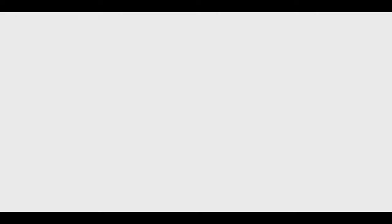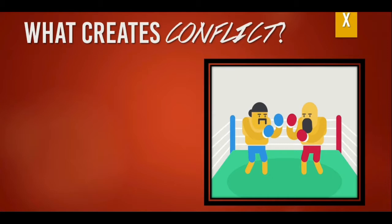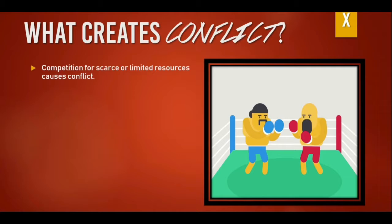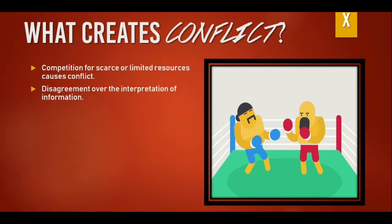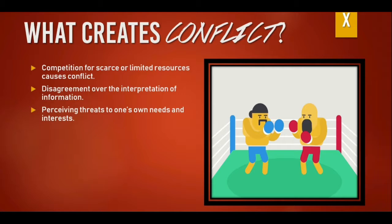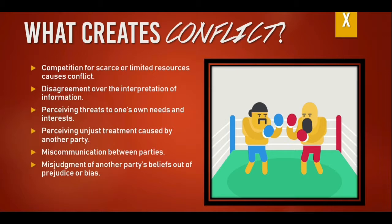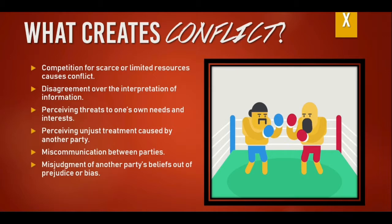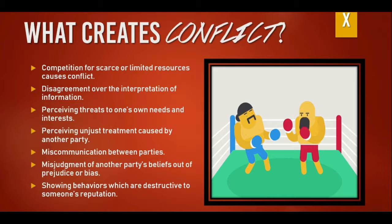So what really creates conflict? First, competition for scarce or limited resources. Second, disagreement over the interpretation of information — different points of view about a certain fact. Third, perceiving threats to one's own needs and interests. Fourth, perceiving unjust treatment caused by another party. Fifth, miscommunication between parties. Sixth, misjudgment of another party's beliefs out of prejudice or bias. And seventh, showing behaviors which are destructive to someone's reputation. Misjudgment, miscommunication, and misunderstanding all correspond to one result — conflict.